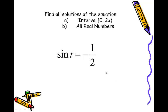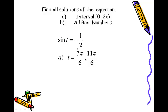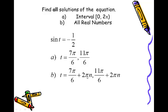Next: sine t equals negative 1/2. Right away you should be thinking pi over 6, and you should be thinking quadrants 3 and 4. The pi over 6 angle in quadrant 3 is 7 pi over 6, and the pi over 6 angle in quadrant 4 is 11 pi over 6. Those are the two angles between 0 and 2 pi. The period for sine is 2 pi, so we add and subtract 2 pi multiples — N can be positive or negative — onto both 7 pi over 6 and 11 pi over 6.